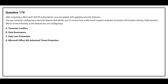Question 174. After acquiring a Microsoft 365 E5 subscription, you are tasked with applying security features. You are configuring a feature that allows you to control how a Microsoft support engineer accesses information during a help session. The options are: Option A: Customer Lockbox, Option B: Data Governance, Option C: Data Loss Prevention, Option D: Microsoft Office 365 Advanced Threat Protection. The correct answer is Option A: Customer Lockbox.